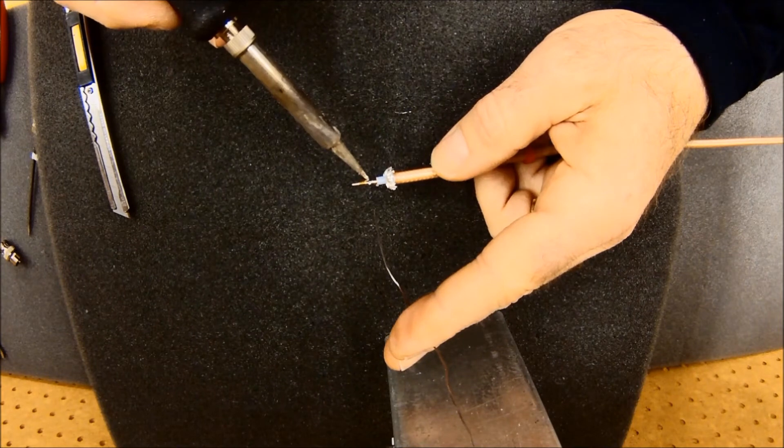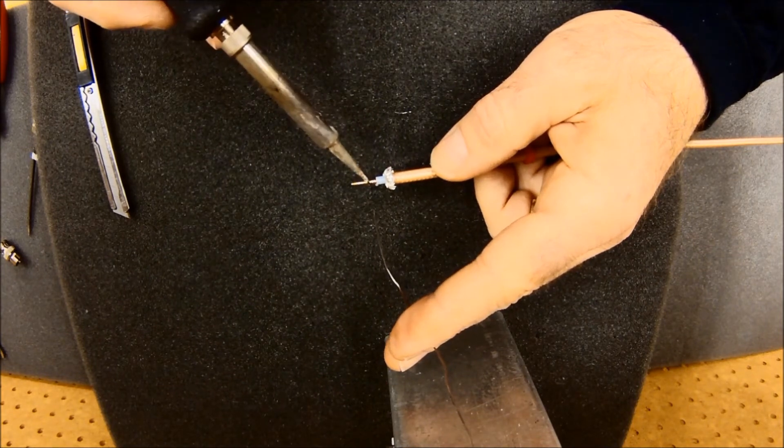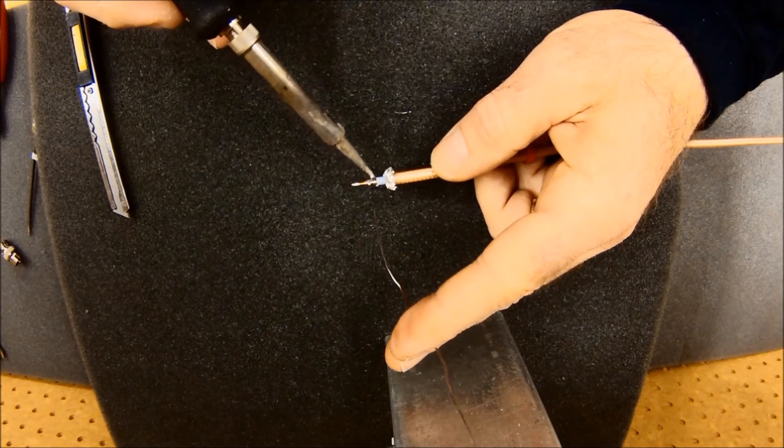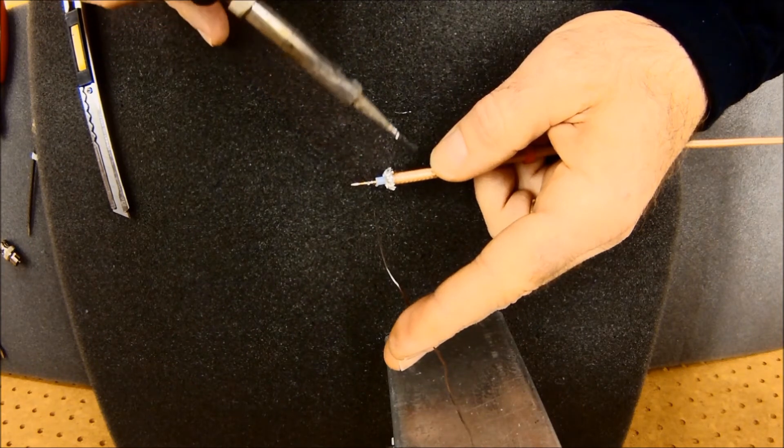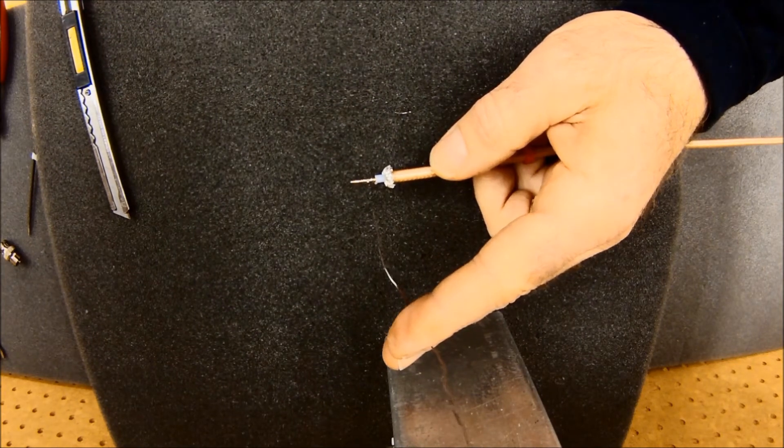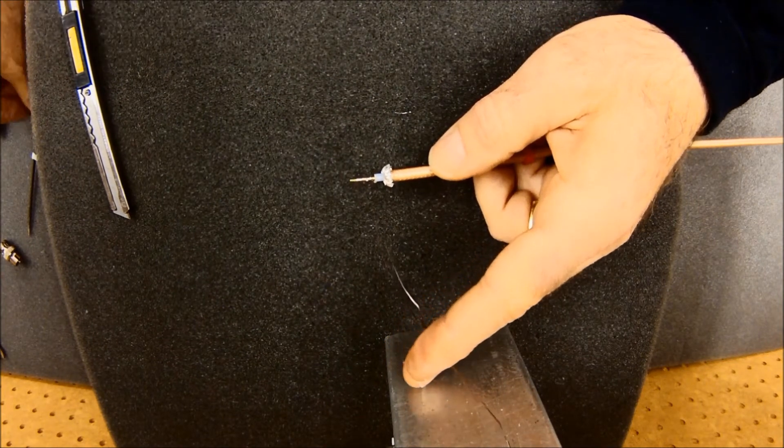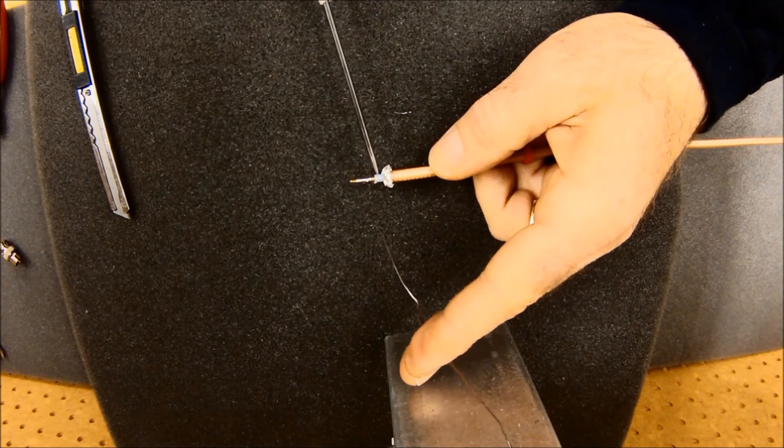Now I can use the heat of the iron to kind of pull the solder both directions, make sure I've got everything glued together. You want to be careful not to overheat it because you don't want to start melting this dielectric back here.